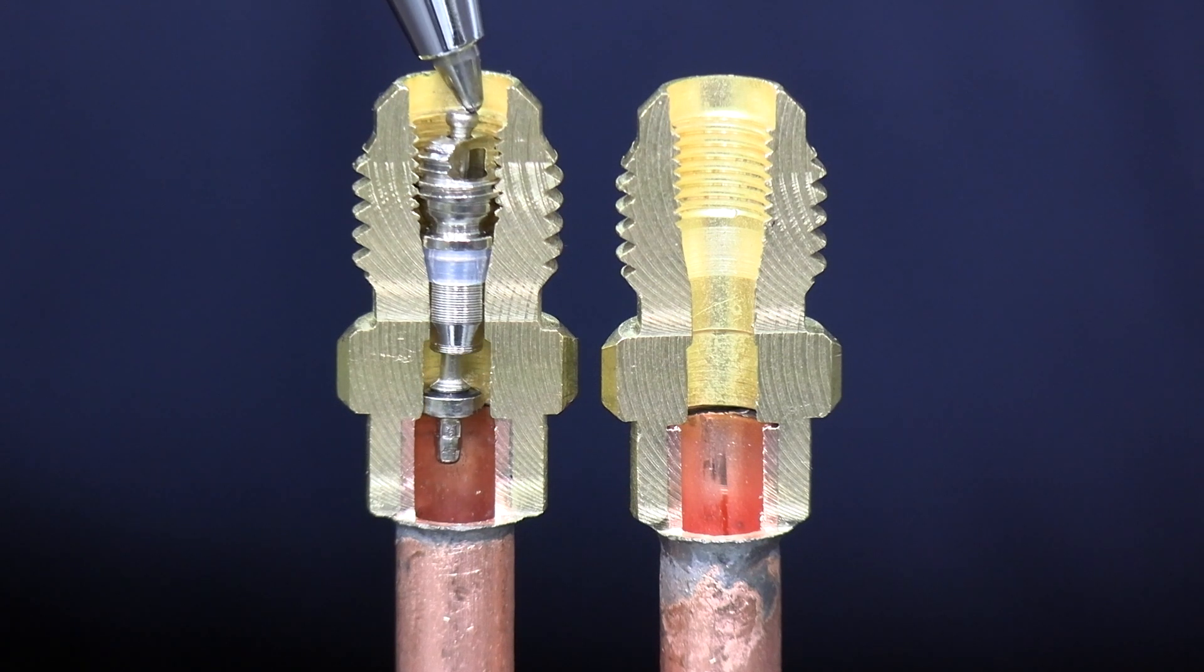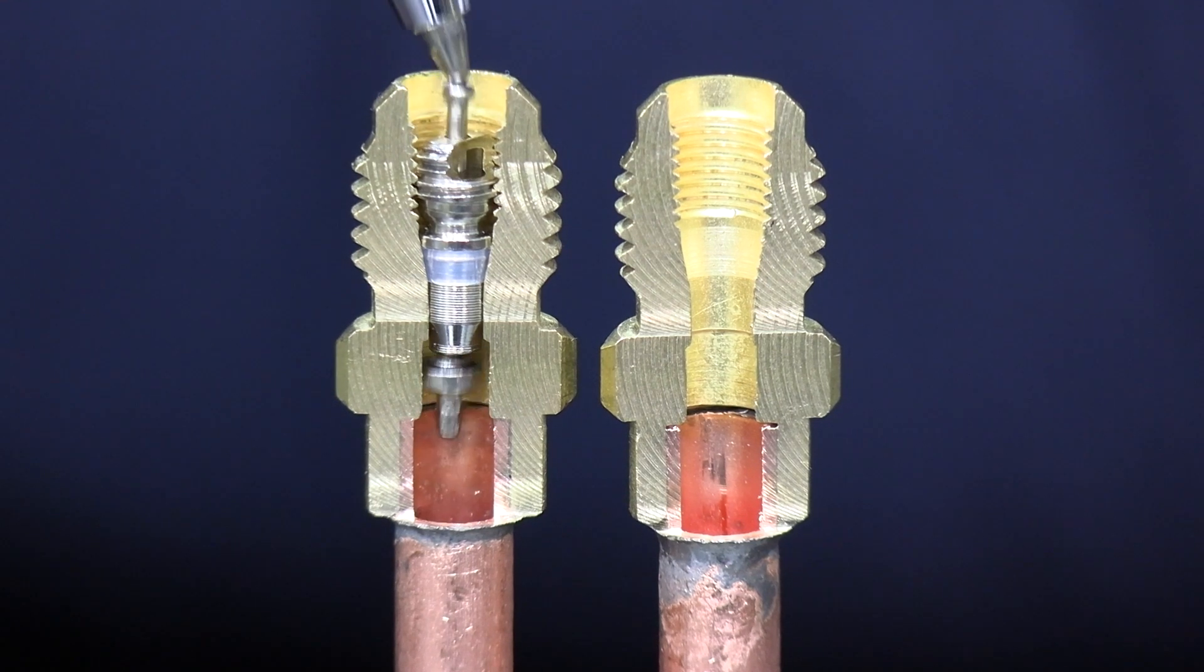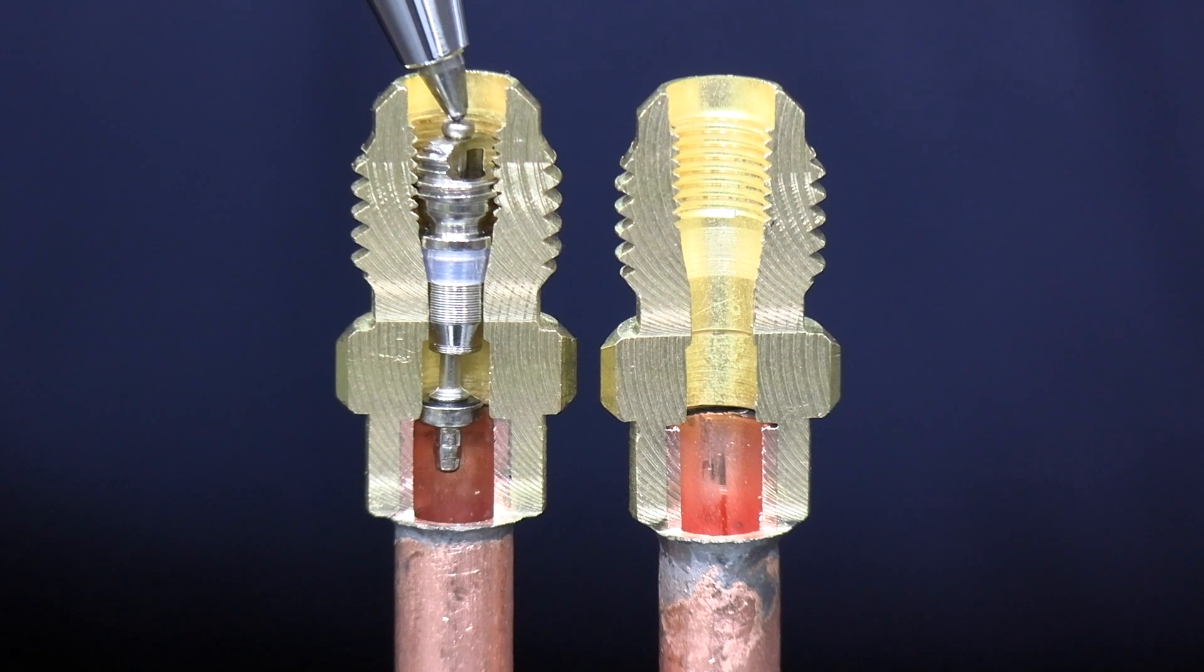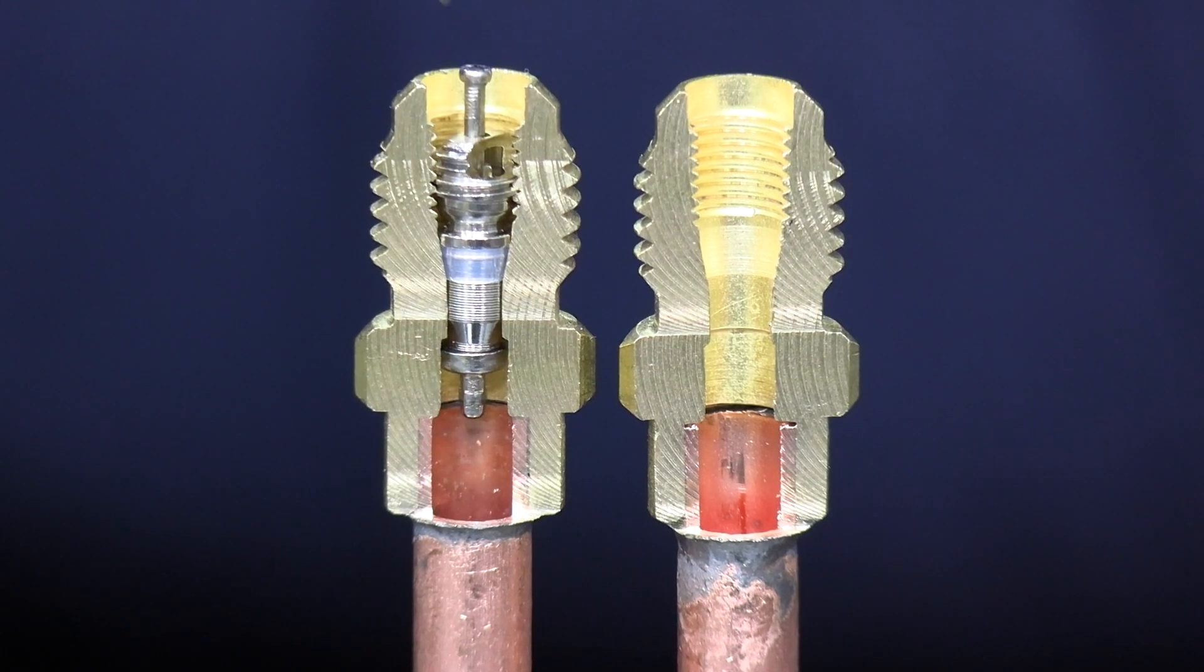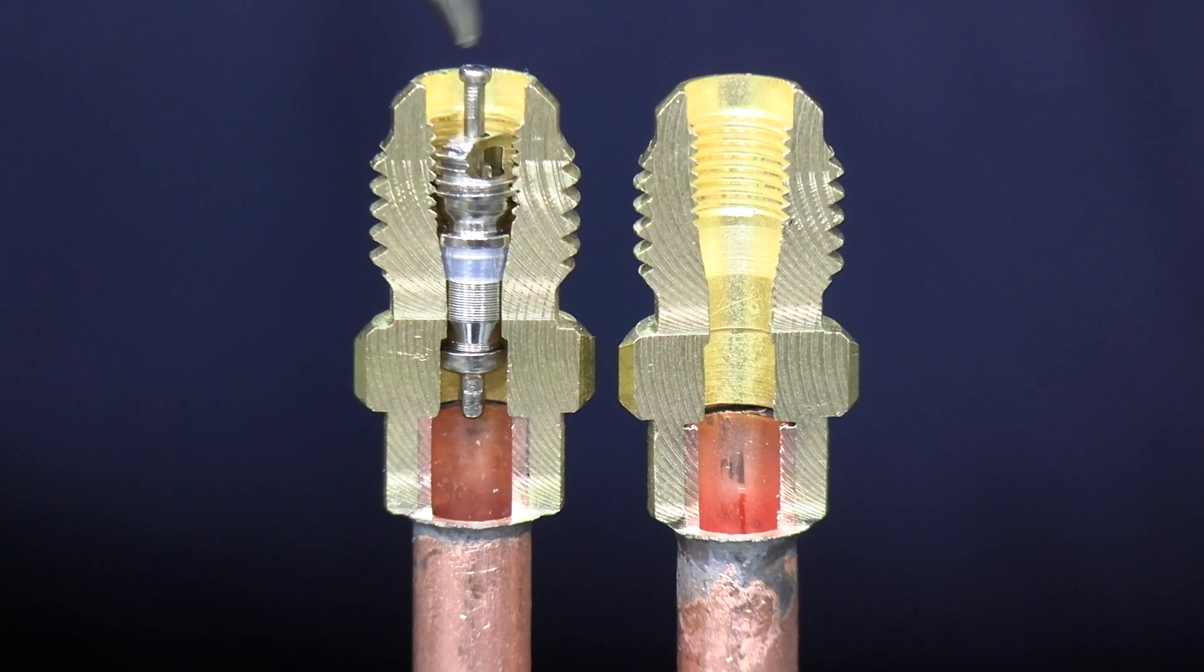you can see where the refrigerant flows through. You can see why it takes forever to evacuate systems leaving the Schrader core in there and why it's incredibly slow recovering refrigerants. Couple that with using quarter hosage which only ever give you 0.5 CFM vacuum flow through them anyway, and you can see why it takes forever to actually evacuate a system.